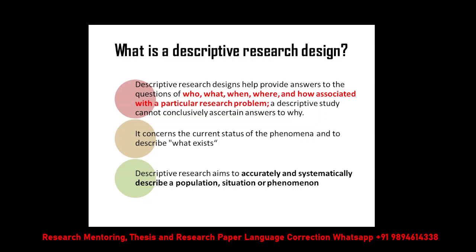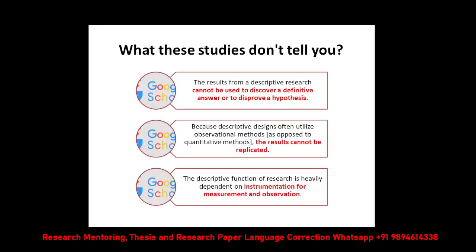For instance, the state of transgender living conditions — this descriptive design will describe their state: who are transgender, what are their problems, and how they are dealing with their life. All those things can be addressed in that particular research. So it's very simple — who, what, when, where, and how are all addressed in descriptive design.